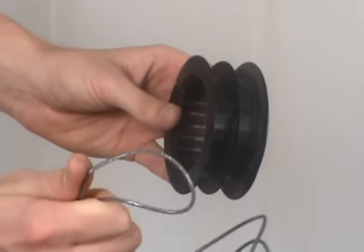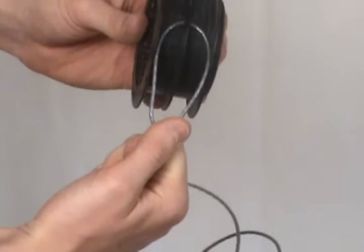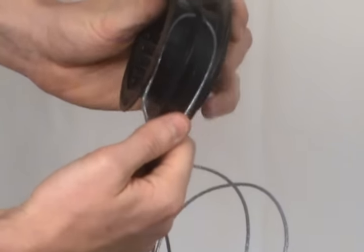Then take your new trimmer line and hook it into the slot in the spool and continue to wind.